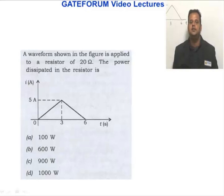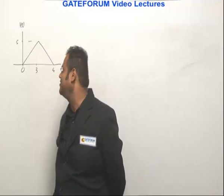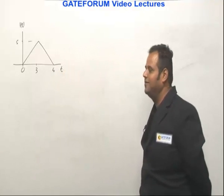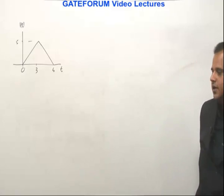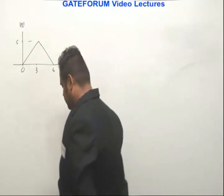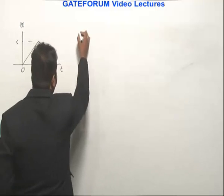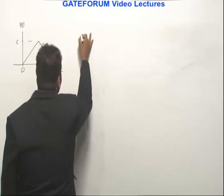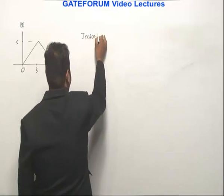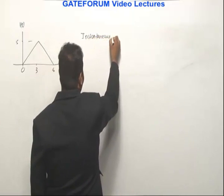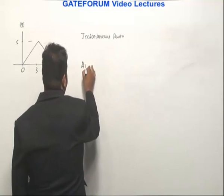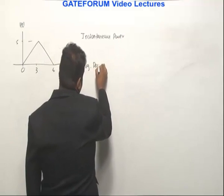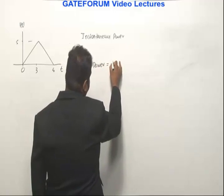A waveform shown in the figure is applied to a resistor of 20 ohm. The power dissipated in the resistor is how much? This is a current waveform applied to a 20 ohm resistor and we are supposed to find the power dissipated. When we talk about power, there are two different things to keep in mind: instantaneous power, which varies with time, and average power.